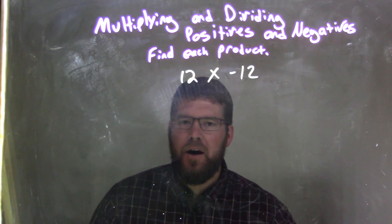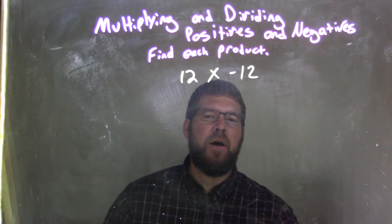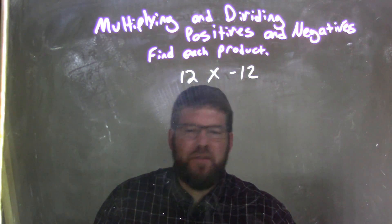A positive times a negative is going to be a negative final answer. Now, if you have 12 times 12 memorized, it's 144.